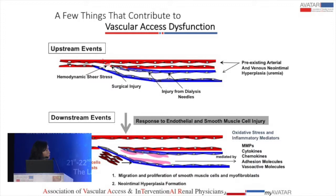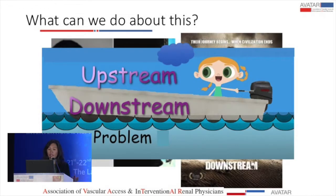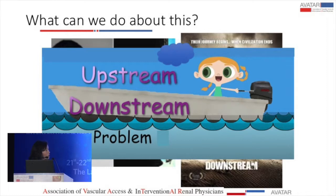Finally, the fistula is able to heal. We have the nice dilated vein, and then we deliberately cause further injury by necessity by cannulating it with dialysis needles. Every time we do that, we set off the inflammation and coagulation cascade. These are upstream events that lead to downstream events. Downstream events are events that occur in response to these upstream events — the response of endothelial and smooth muscle cells to injury, which proliferate and migrate from the adventitia to the intima, creating neointimal hyperplasia and causing stenosis.